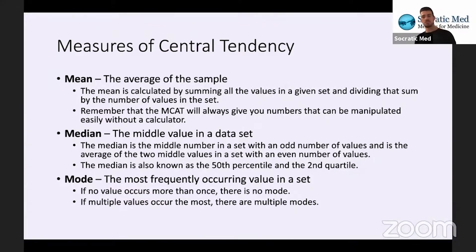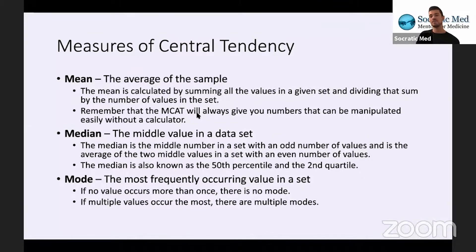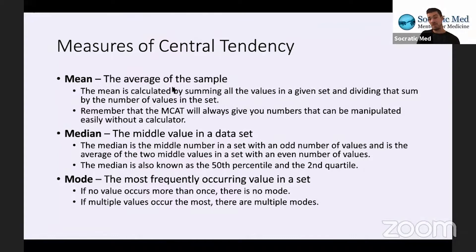So the measures of central tendency — I'm sure you've all learned them a bunch of times, but we're just going to go over them. The mean is the average of the sample. It's calculated by summing all of the values in a given set and then dividing that sum by the number of values. The MCAT will always give you numbers that can be manipulated easily without a calculator, so any math — like taking an average — is something you can do in your head or very easily on scrap paper, which is a laminated notepad with a marker.